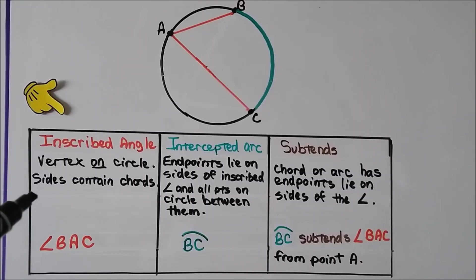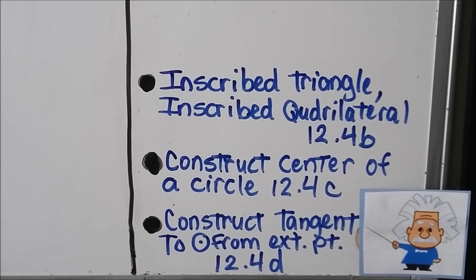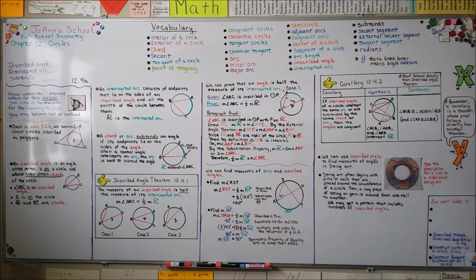Make sure you've written this down and learned what each of these terms mean. We have three more parts to lesson 12.4 — parts B, C, and D. In 12.4B we'll talk about inscribed triangles and quadrilaterals, then construct the center of a circle, and then construct a tangent to a circle from an exterior point in 12.4D. Check the description for a link about string art and the Spirograph game. I hope you have a great day — see you next time!